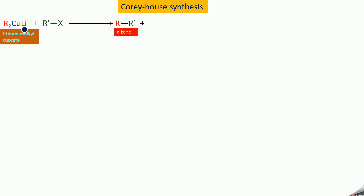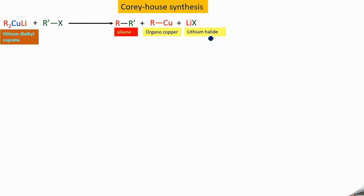Then R combines with Cu to form R-Cu. The lithium combines with the halogen to form lithium halide. So we are getting organocopper and lithium halide as byproducts, and here we are getting an alkane. This reaction we call Corey-House synthesis.